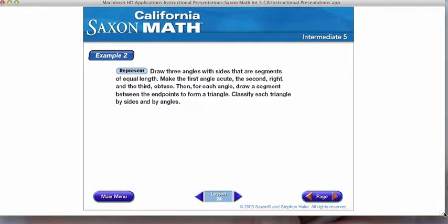Draw three angles with sides that are segments of equal length. Make the first angle acute, the second right, and the third obtuse. Then for each angle, draw a segment between the end points to form a triangle. Classify each triangle by sides and angles. This is going to take us a minute, so bear with me. The first step says draw three angles with sides that are segments of equal length. Make one acute, the second right, and the third obtuse.